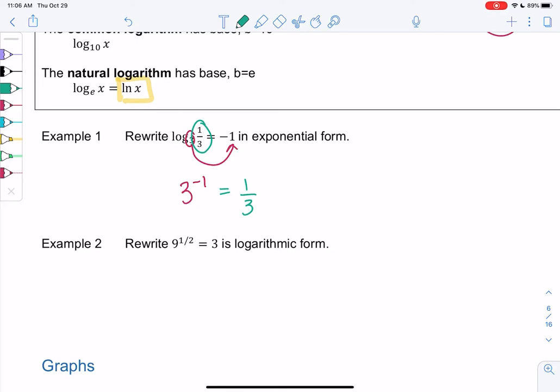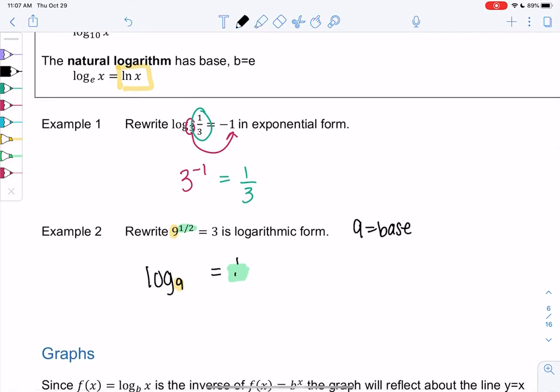Example 2. Let's rewrite 9 to the one-half equals 3 in log form. So we're going to write log base something of something equals something. The base is always the same. So 9 is a base for a power, so 9 is my base for the log. Logs always equal powers. So one-half goes on the outside. Logs are solving for powers, so it equals one-half, and it ends up being log base 9 of 3 equals one-half. And we can always go back and check. So 9 to the one-half power, does that equal 3? Yep, because the square root of 9 is 3.